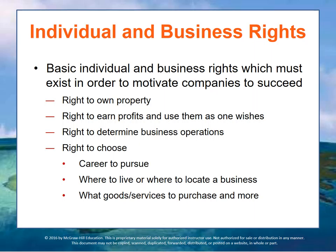Individuals must have the right to choose the career they like to pursue, where they want to live, what goods and services to purchase, and more. This is what allows free markets to work because people can move if they can't get what they need, and they can choose to purchase things or not, which helps drive more efficient pricing. Business must have the right to choose where to locate, what goods and services to produce, and what resources to use in the production process. Without these rights, businesses really can't function effectively as a free enterprise because they're not really motivated to succeed. These individual and business rights make possible the open exchange of goods and services and effective pricing.